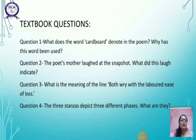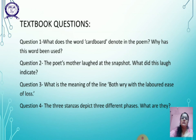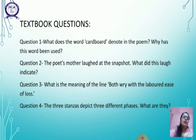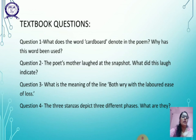Now here are a few textbook questions. The first question: what does the word 'cardboard' denote in the poem? Why has this word been used? The word 'cardboard' denotes the photograph of a mother and two of her cousins. This photograph was a faint memory of the mother and two of her cousins when they had gone paddling. Now only the frame and the faded memories of the photograph remained.